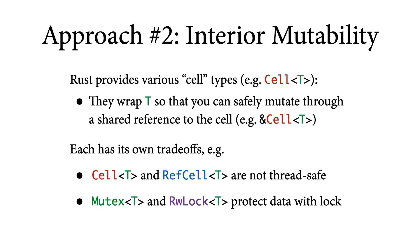The second approach is to use one of the various so-called cell types that Rust provides. Cell types allow you to wrap a value of type T in such a way that you can safely mutate the value even if you only have a shared reference to the cell — a kind of functionality that in the Rust world is called interior mutability. Interior mutability sounds like exactly what we want in the case of a graph or doubly linked list, since the nodes are shared but we still want to be able to mutate them. On the other hand, there's no free lunch: mutating shared state is not safe in general, and so these cell types come with a variety of trade-offs.